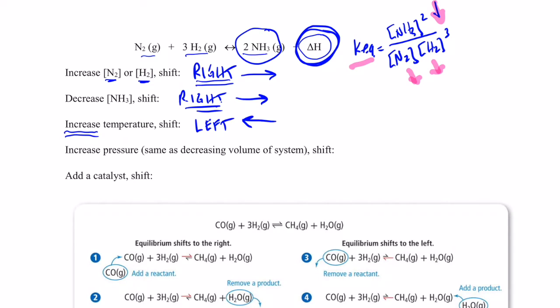And in shifting left, the concentration of nitrogen and hydrogen would go up and the ammonia would go down. Remember, changing temperature will also change the value of the equilibrium constant. So, let me go through that temperature change one more time.